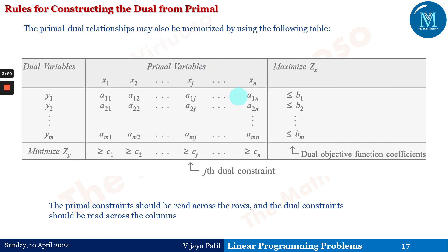All six rules can be incorporated into a summary table. Dual variables y1, y2, ..., ym correspond to a minimization problem Zy, and primal variables x1, x2, ..., xn correspond to maximization of Z. The dual objective function coefficients are b1, b2, ..., bm, and the jth dual constraint involves coefficients c1, c2, ..., cj as the right-hand side constants. For example, the first dual constraint reads: a11·y1 + a21·y2 + ... + am1·ym ≥ c1.